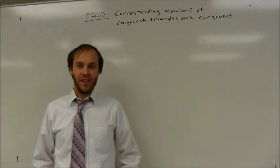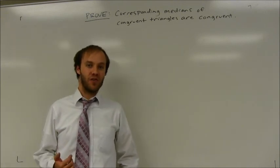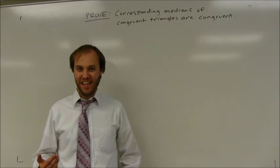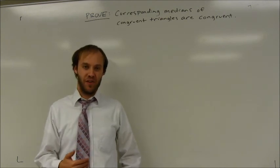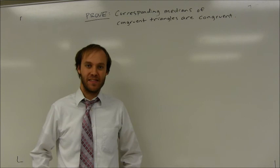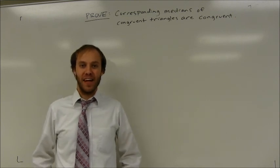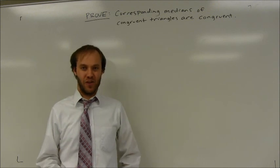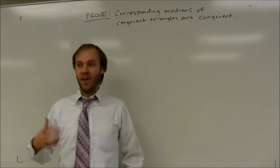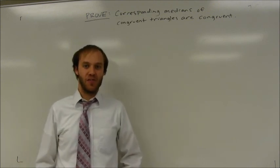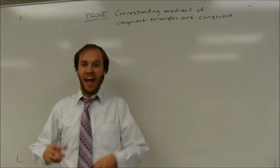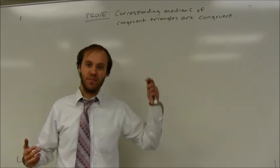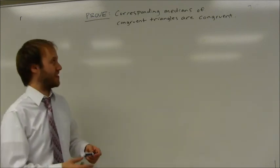We have a concept that says the corresponding parts of congruent triangles are congruent. However, the intention there is not that any of their corresponding parts are congruent — or at least we haven't looked at that concept yet. We've really only looked at the idea that the corresponding sides are congruent and that the corresponding angles are congruent. So the question is: are other parts that correspond to each other also congruent? Are corresponding altitudes congruent? Are corresponding medians congruent? Well, we're going to show one of those examples in this case.